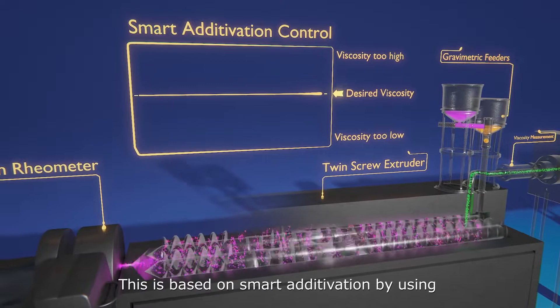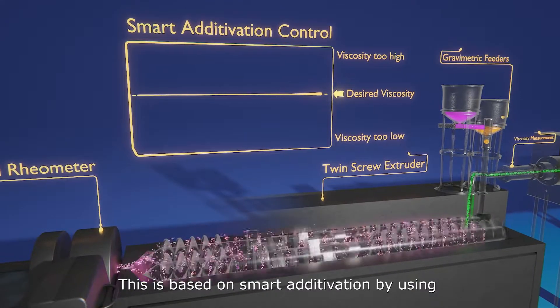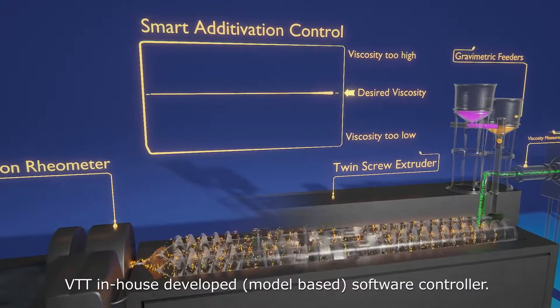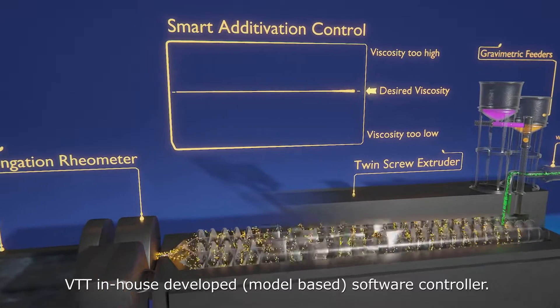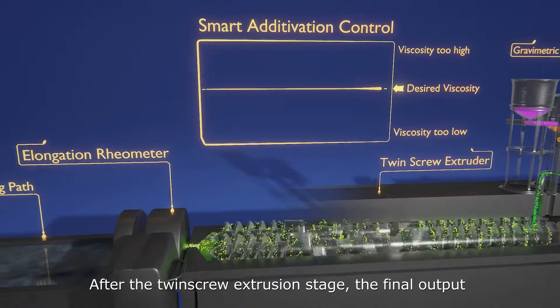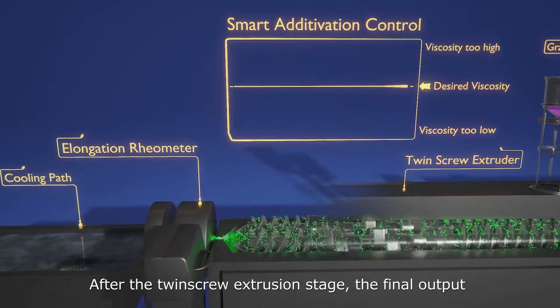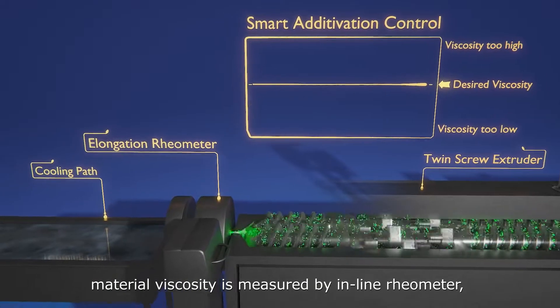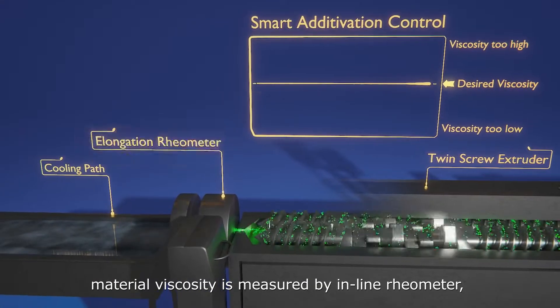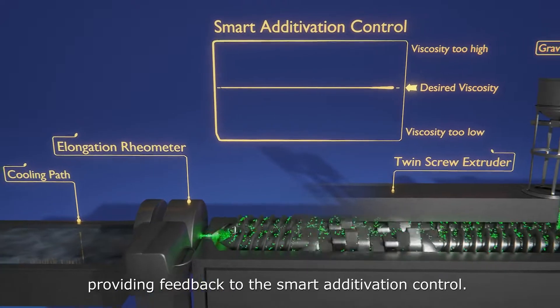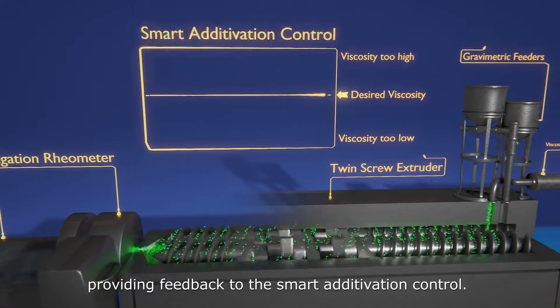This is based on smart additivation by using a VTT in-house developed model-based software controller. After the twin screw extruder stage, the final output material viscosity is measured by an inline rheometer, providing feedback to the smart additivation control.